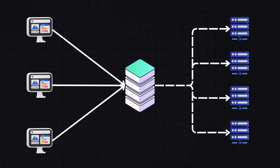Now let's see what happens when a load balancer goes down. When the load balancer fails, it can impact the overall availability and performance of the application or services it manages. It's basically a single point of failure, and if it goes down, all of the servers become unavailable to clients. To minimize the impact, several strategies can be employed.